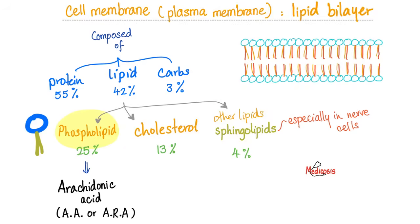Your cell membrane, also known as plasma membrane or cytoplasmic membrane, is a lipid bilayer. Here's the first layer and the second layer — bilayer. It is made of proteins, lipids, and carbohydrates. What kind of lipids? All kinds of lipids, such as phospholipids, cholesterol, and other lipids, for example sphingolipids in nerve cells. To learn about sphingolipidosis, see my biochemistry playlist. Today we'll focus on phospholipids, because phospholipids are the source of the arachidonic acid.